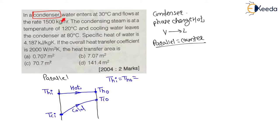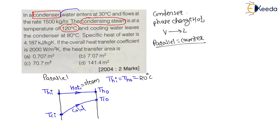In a condenser, water enters at 30°C and flows at the rate of 1500 kg per hour. The condensing steam is at a temperature of 120°C. So T_HI equals T_HO equals 120°C — steam is the hot fluid. Water is the cold fluid, and the inlet temperature of water T_CI is 30°C.